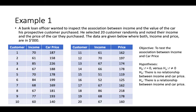Let's take a look at an example. A bank loan officer wanted to inspect whether there's a relationship between income and value of the car his prospective customer purchased. He selected 20 customers randomly and noted their income and the price of the car they purchased. The objective is to test the association between income and car price. The null hypothesis is there's no relationship between income and car price, and the alternative is there is a significant relationship between income and car price.